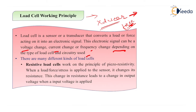Depending upon the output type, load cells have two main types. The first type is the resistive load cell, and the second is the capacitive load cell.